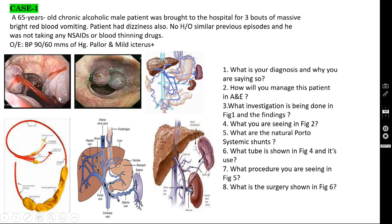How to manage this patient in A&E: follow ABCDE — airway, breathing, circulation. Stabilize the patient first. Since the patient is hypotensive, immediately start two large-bore peripheral IV lines and rush in fluids — at least 1 to 1.5 liters of Ringer's lactate or normal saline. Monitor whether BP picks up and whether urine output is adequate. Only after hemodynamic stabilization should you proceed to upper GI endoscopy.